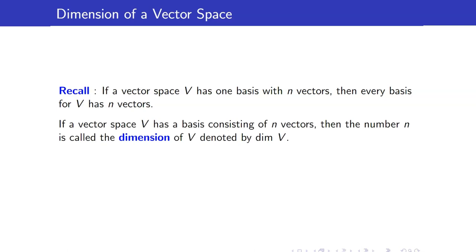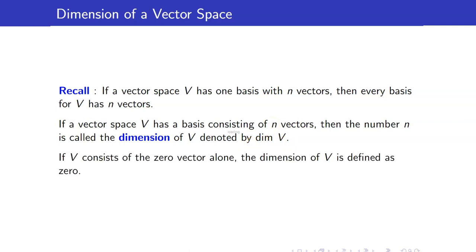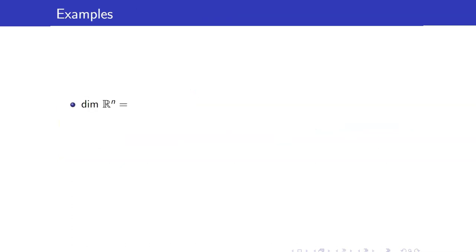If a vector space V has a basis consisting of n vectors, then this number n — the number of elements in your basis — is called the dimension of V and is denoted by this symbol. If V consists of the zero vector alone, the dimension of V is defined as zero.